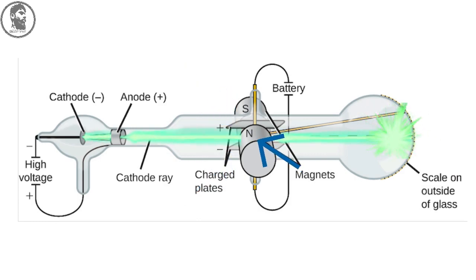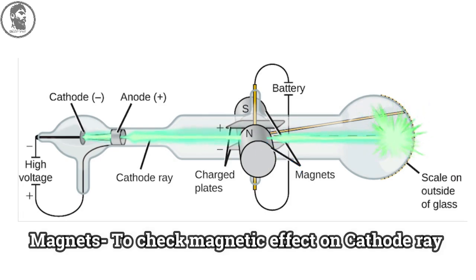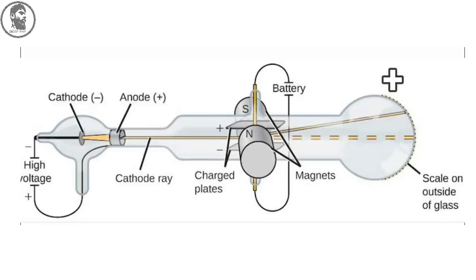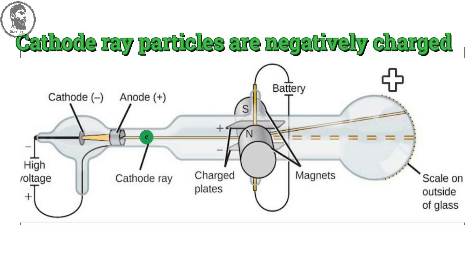He also placed magnet around the cathode ray tube to check magnetic effect on cathode rays. When the cathode rays passed through these plates, it got deflected towards positively charged plate. By this observation, J.J. Thomson concluded that cathode ray particles are negatively charged particles.